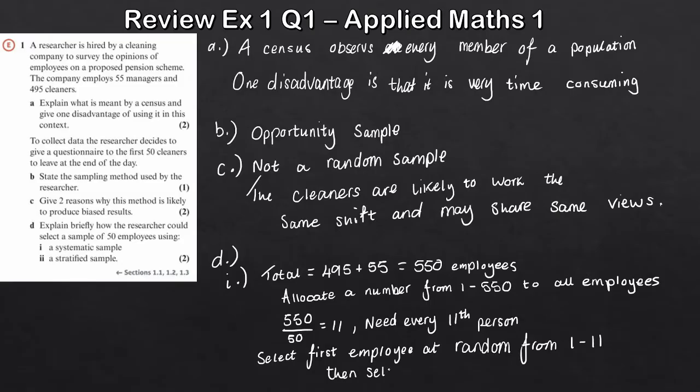Then we select every 11th person after. So like you can see, it is very very systematic. It's quite long as well. For example, if our first one randomly is the fifth person, the next one would be 16, so add 11 would be 16, 27, 38, so on and so on. I'm not going to keep going but you get the idea there.